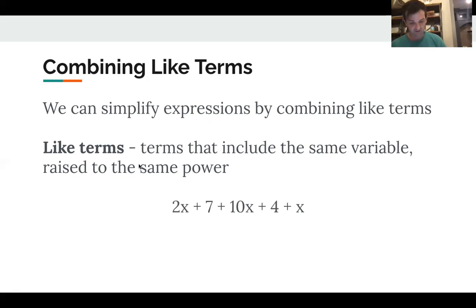So in this problem, the terms that are like each other are first 2x, 10x, and x, right? We're adding 2x plus 10x plus x. Are we allowed to rearrange the order here and have 2x plus 10x plus x altogether? Absolutely. Because of the commutative property, right? So this would be 2x's plus 10x's is 12x's plus another x is 13x.